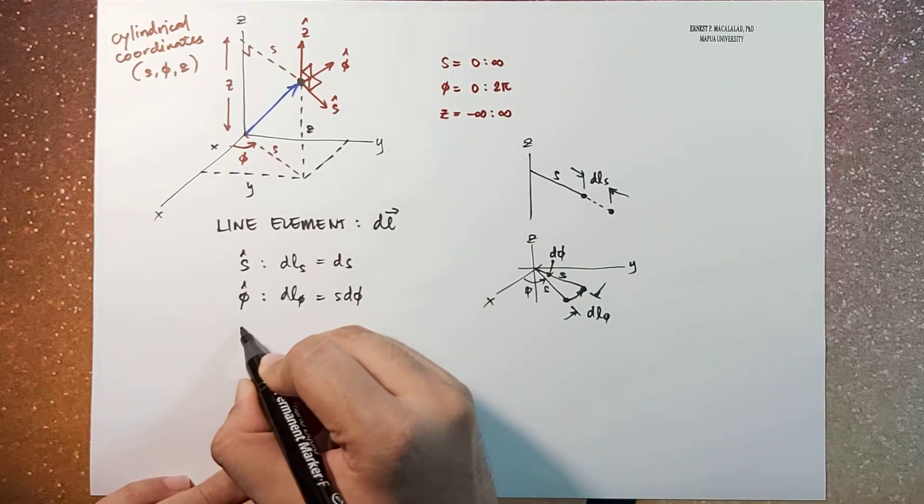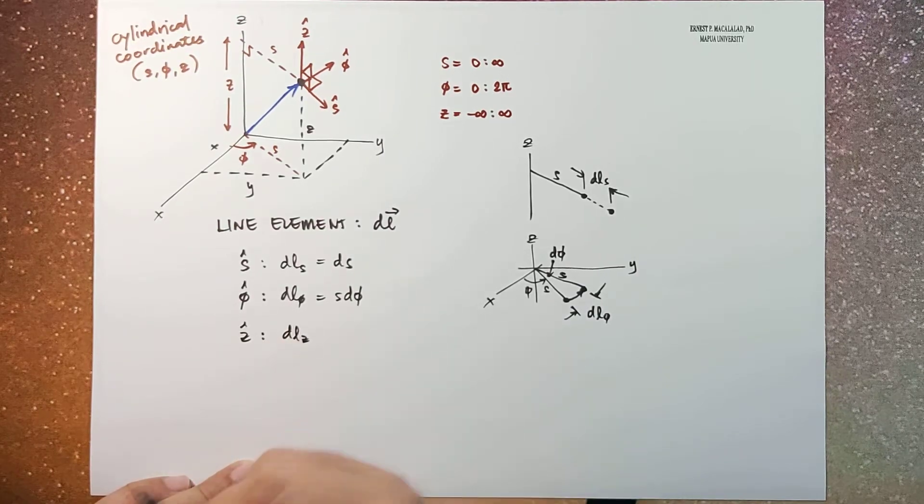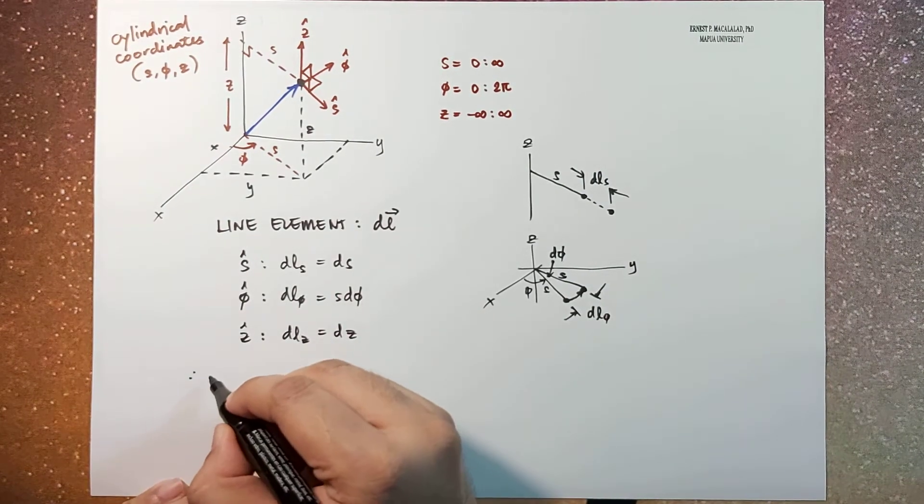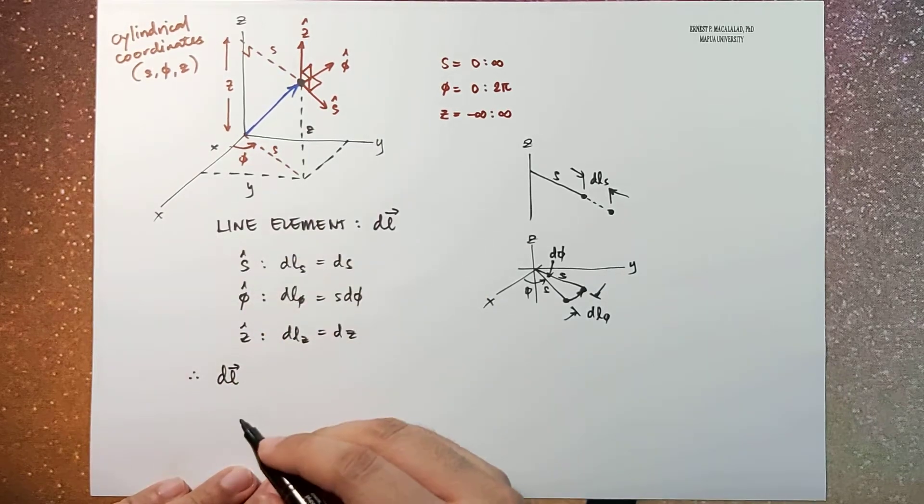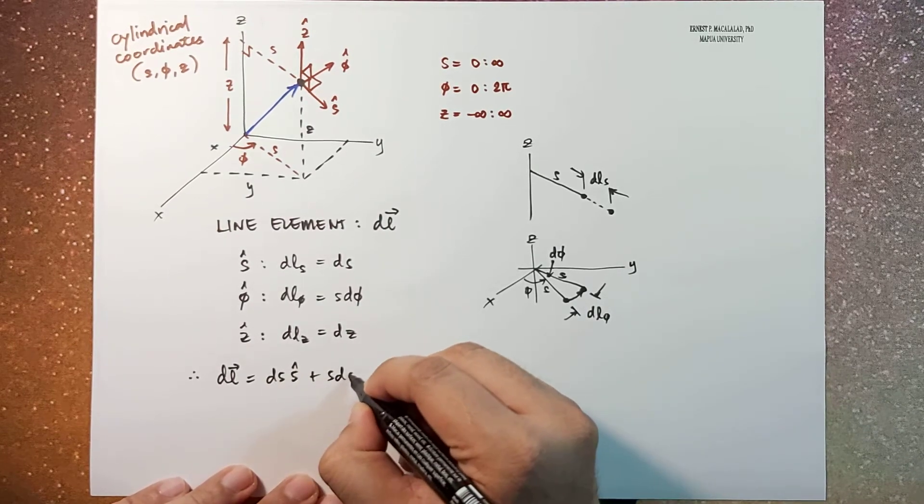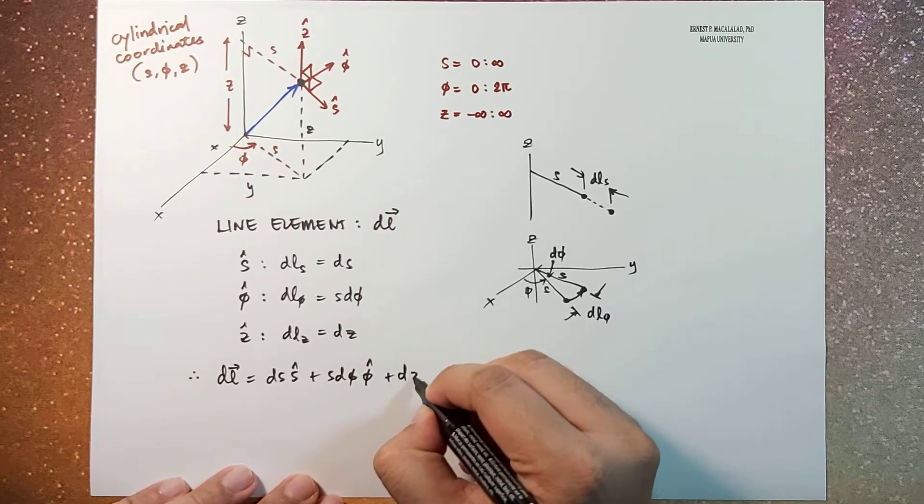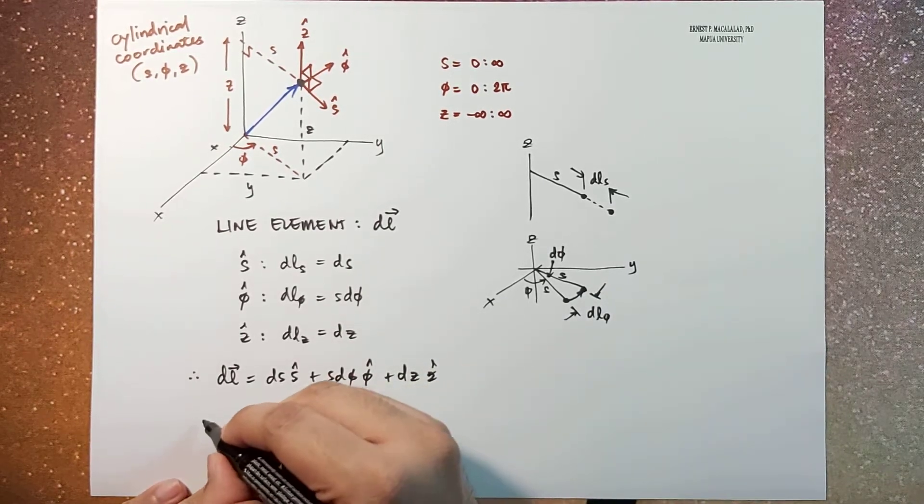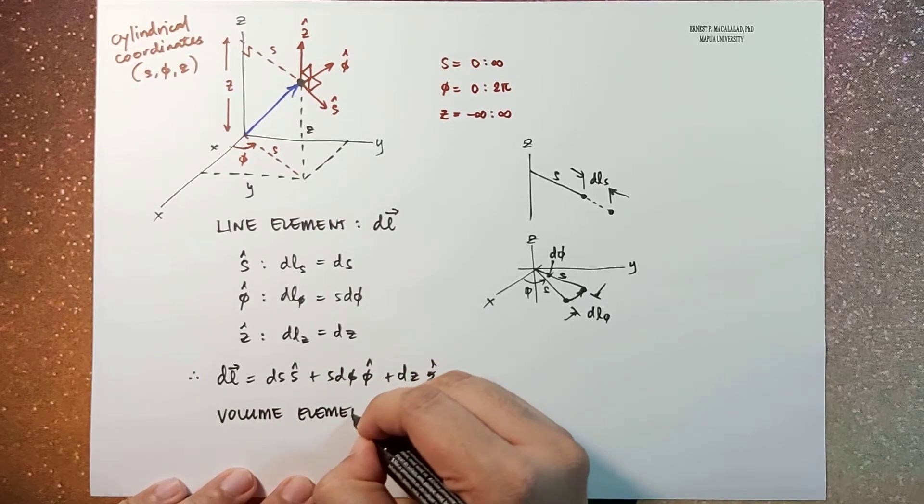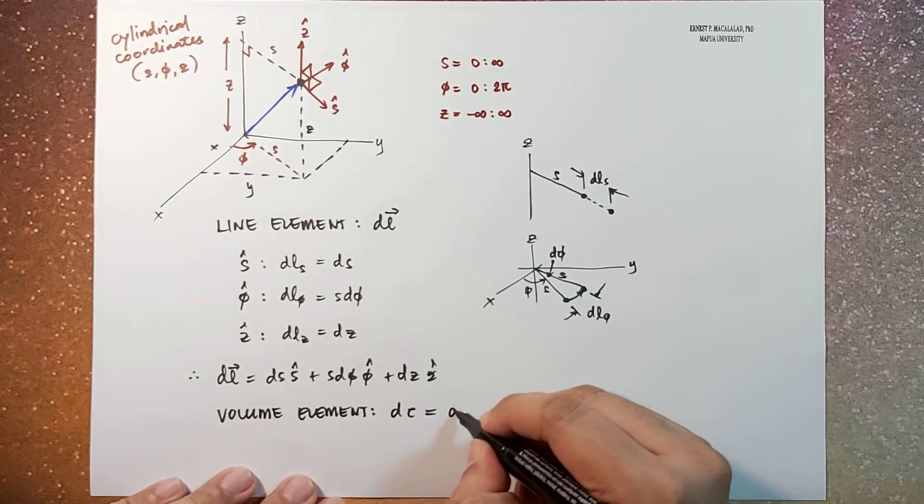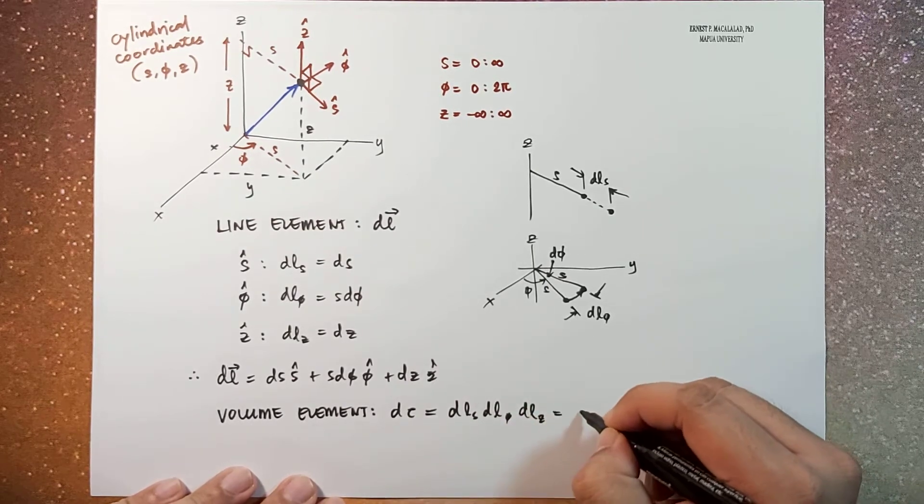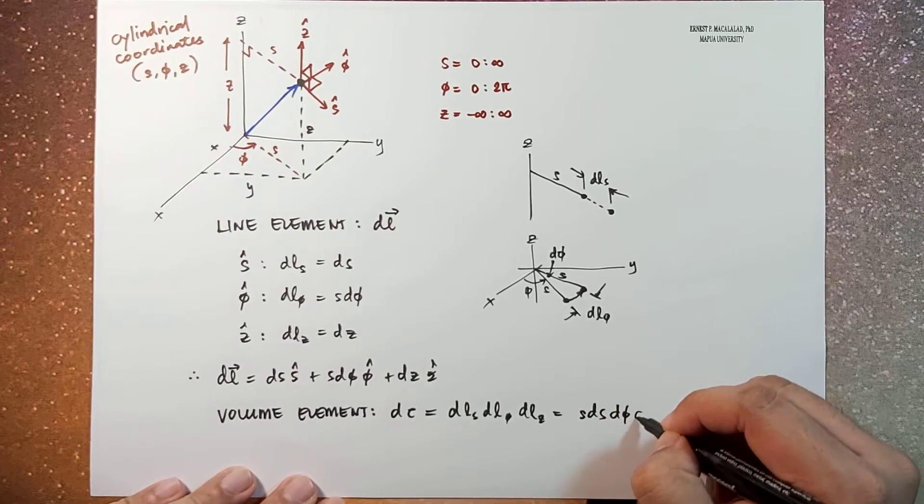And of course lastly z hat, that's the displacement along the z direction, which is the same as your dz. So therefore, the line element d l vector is ds s hat plus s d phi phi hat plus dz z hat. And the volume element d tau is just given by d ls d l phi d lz, which is s ds d phi dz.